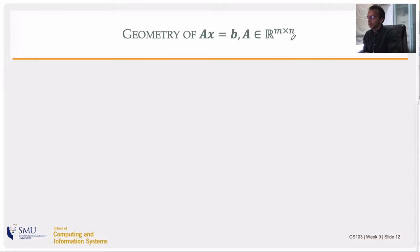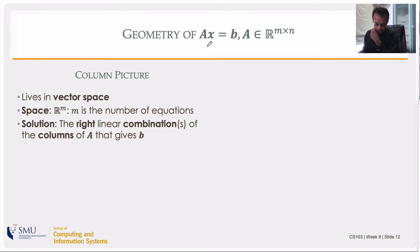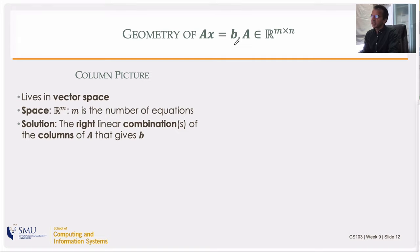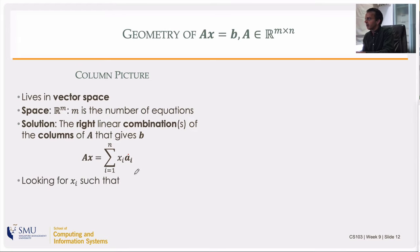Starting with our favorite equation Ax = b, for a matrix of size m rows and n columns, we have the column picture of matrix equations. This means working with the vector space defined by the columns of A. The solution is a linear combination of the columns of A that gives you b, since Ax is a linear combination of the columns of A weighted by the components of x.